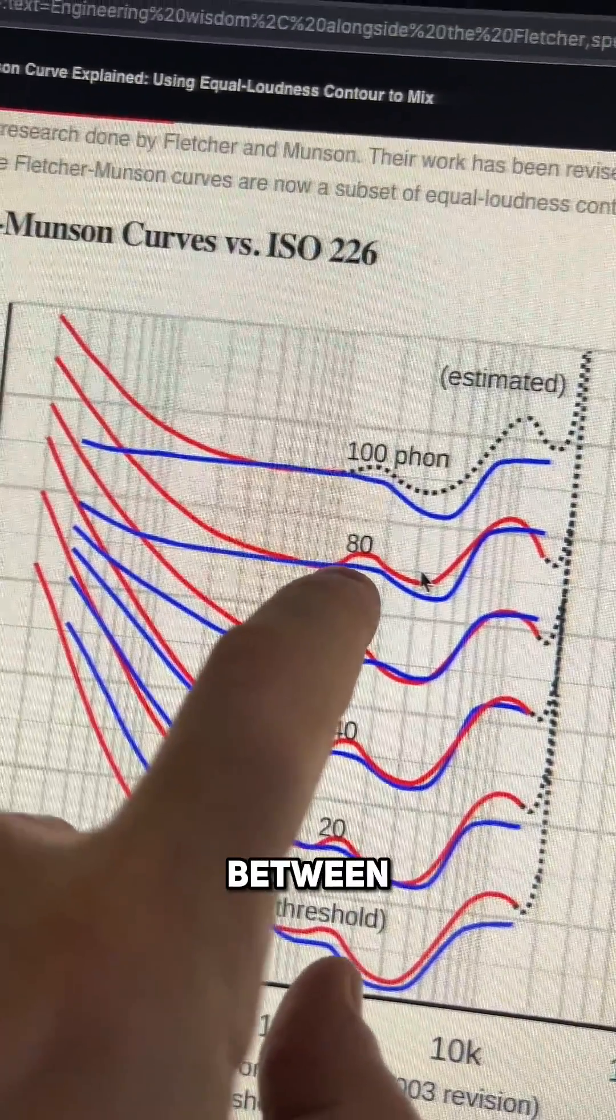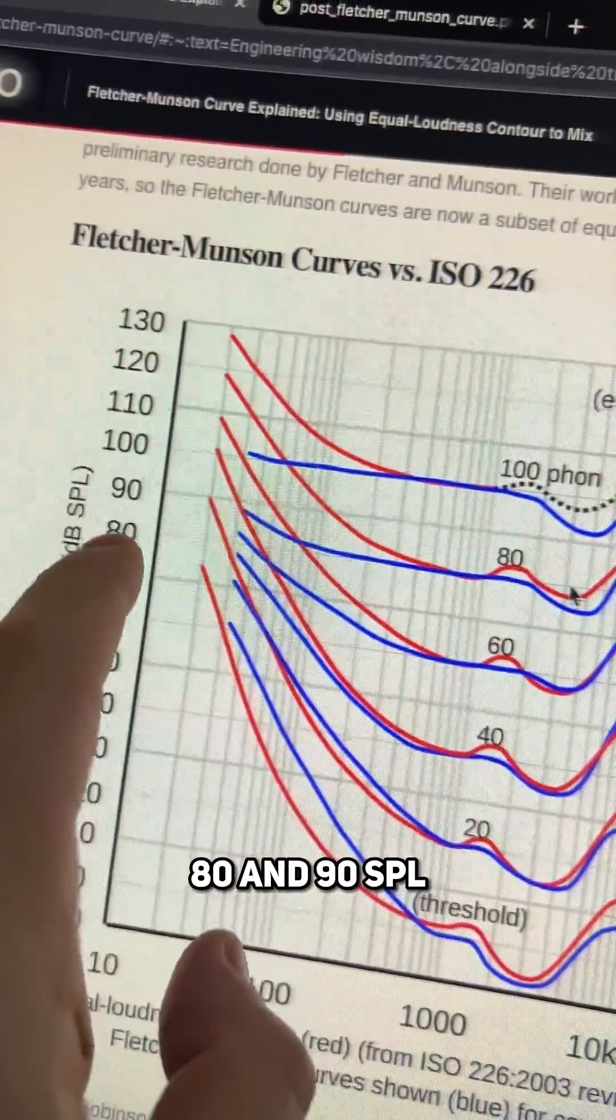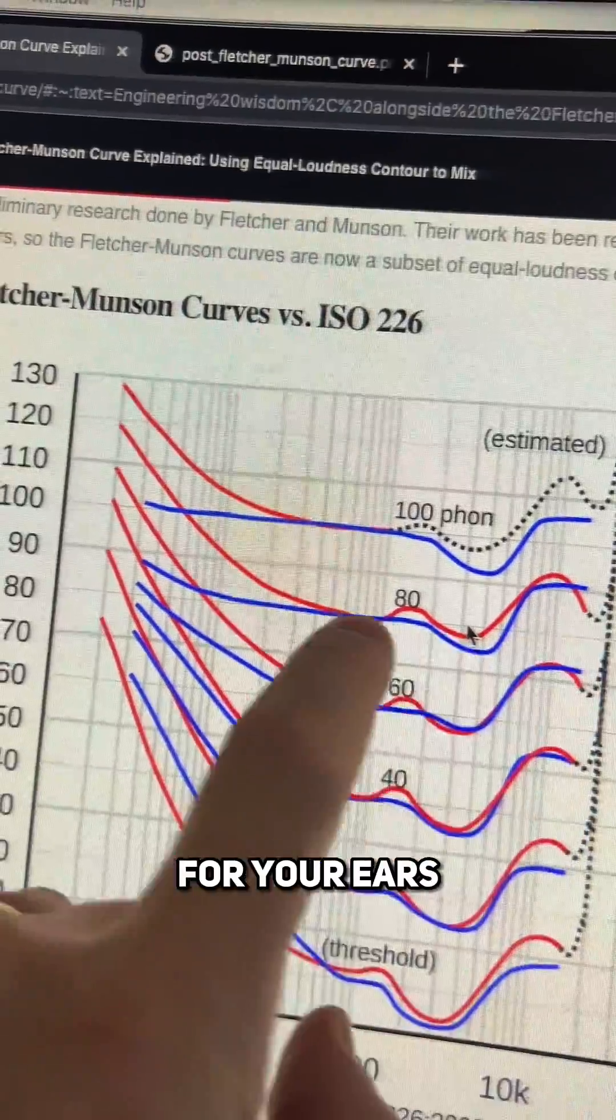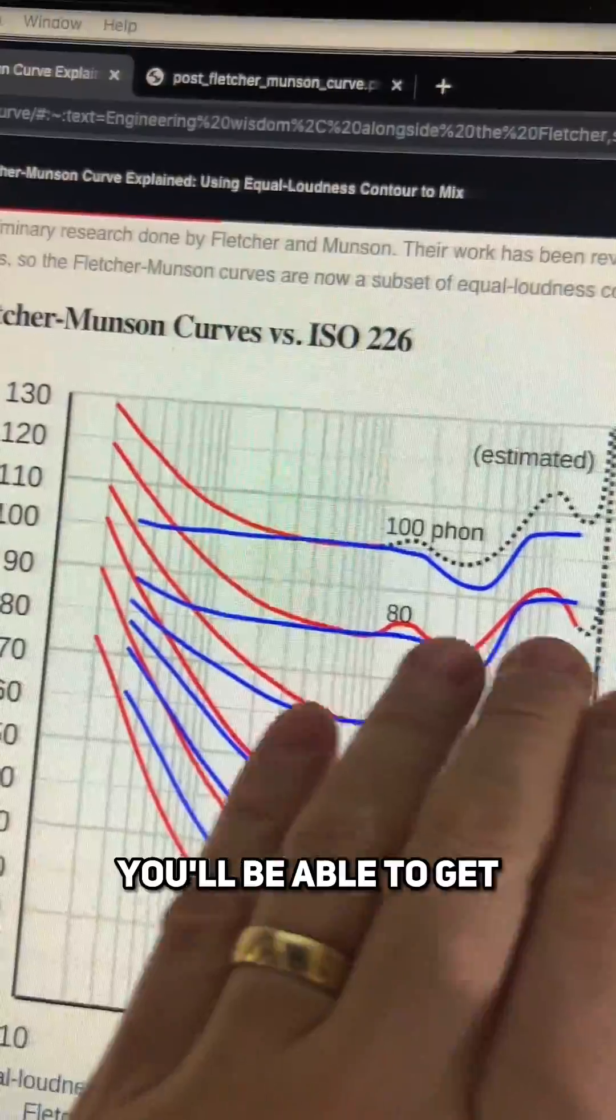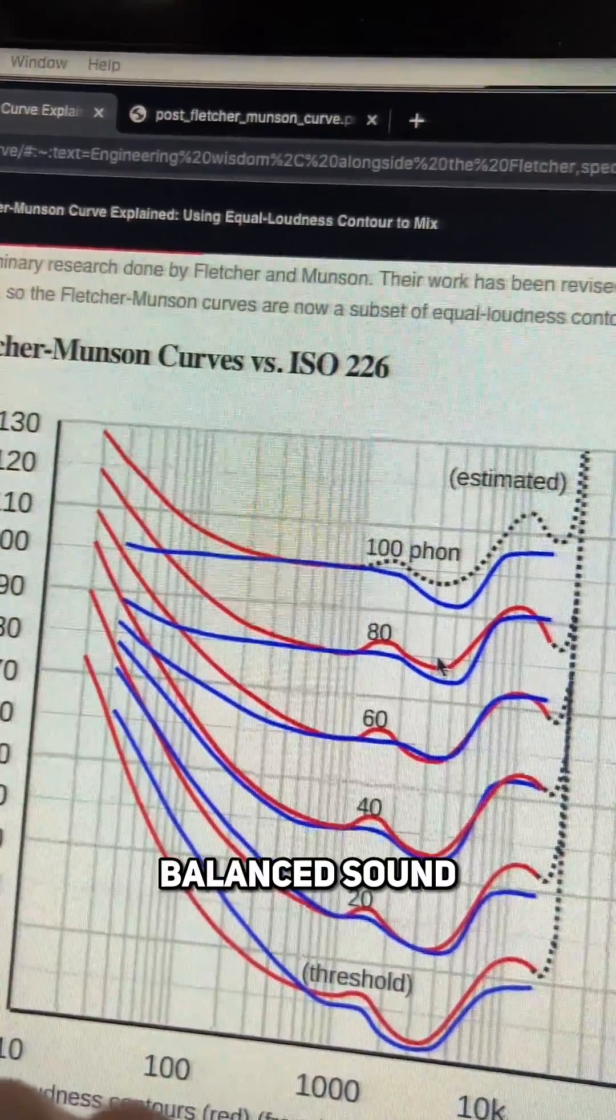When you play between 80 and 90 SPL, it's the flattest curve for your ears, so you won't be adding too much low end. When you are mixing at this level, you will be able to get a much more balanced sound.